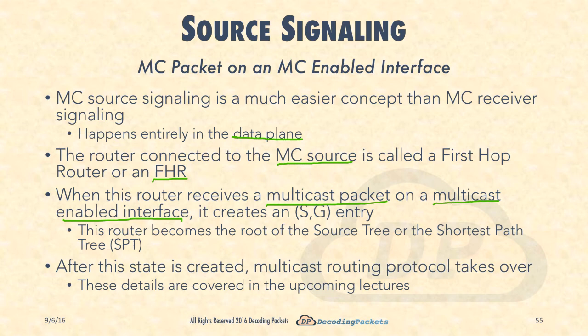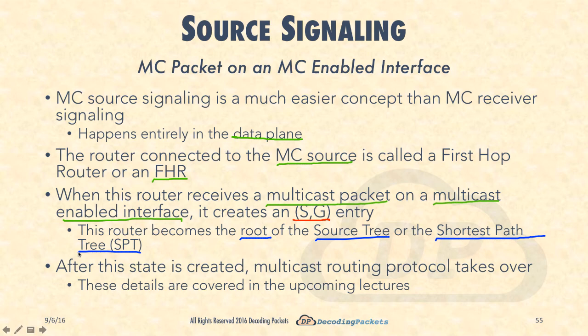The forwarding state of the multicast routing table can now be created or populated. The S,G entry, which is the basis of any tree, can now be created. The router essentially becomes the root of the source tree — or the shortest path tree, as we call it in our routing protocol, which is going to be PIM.